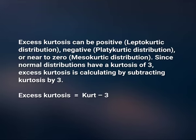Excess kurtosis is used in statistics and probability theory to compare the kurtosis coefficient with the normal distribution. Excess kurtosis can be positive (leptokurtic distribution), negative (platykurtic distribution), or near to 0 (mesokurtic distribution). Since normal distributions have a kurtosis of 3, excess kurtosis is calculated by subtracting 3 from the kurtosis. So, excess kurtosis equals kurtosis minus 3.